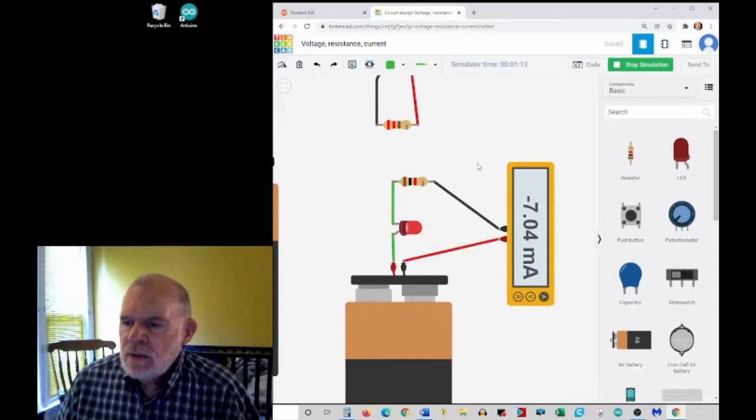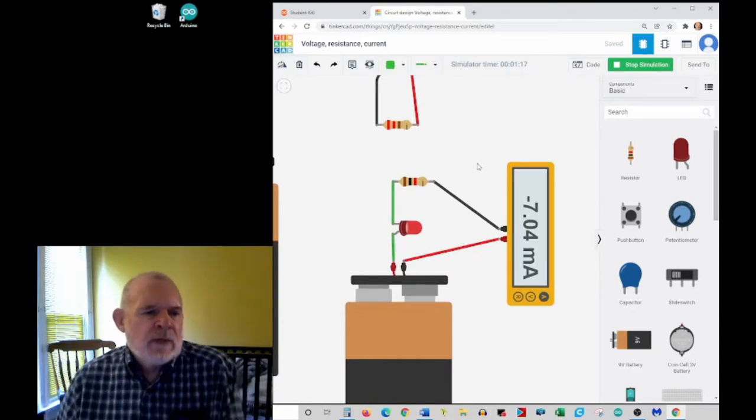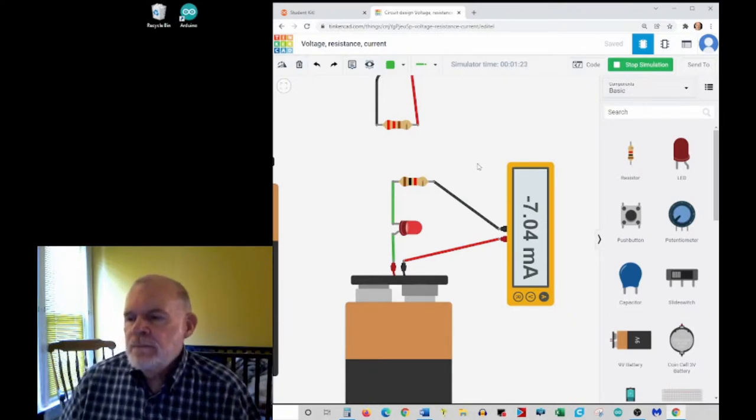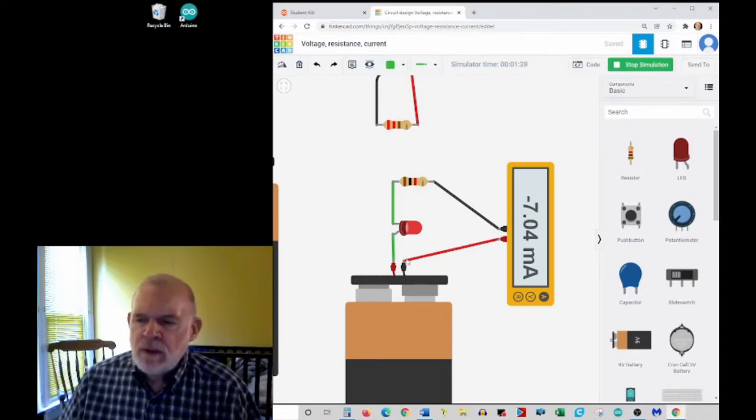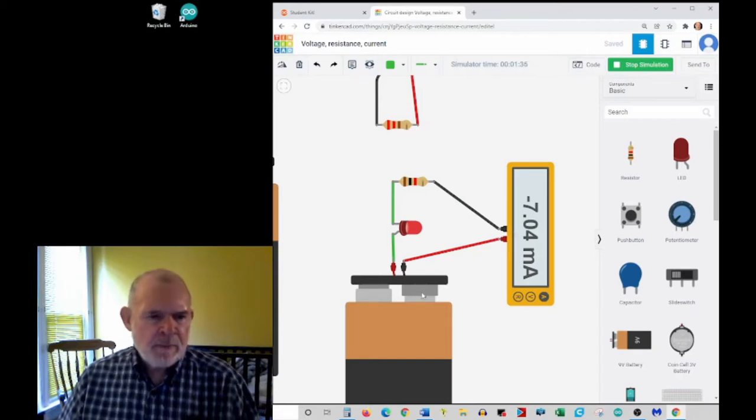The other quantity is called current, which is the actual flow of electrons through the circuit. To measure this, we actually have to put our meter in the circuit. So the flow of electrons through the components also flows through the meter and back to the power source.